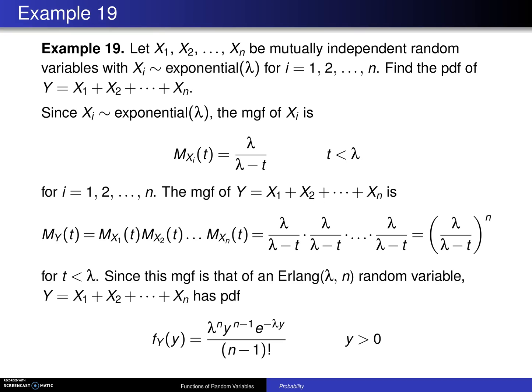The previous example showed that when you add up mutually independent Poisson random variables, you get a Poisson random variable. So the question is, when you add up random variables that are in one particular family, does it always stay in the family? And from this example right here, you'll find out that the answer is no, that is not true. So here's the example.